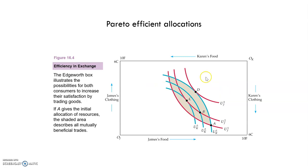This Edgeworth box is illustrating an important point: even if a trade from an inefficient allocation makes both people better off, the new allocation is not necessarily efficient. For example, if we go from A to B, B is less inefficient than A, but it doesn't mean that B is going to be efficient. In B we don't find that the marginal rate of substitution for both consumers is the same. But we do find it in C and D — the indifference curves are tangent — so in both C and D we will have efficient allocations.